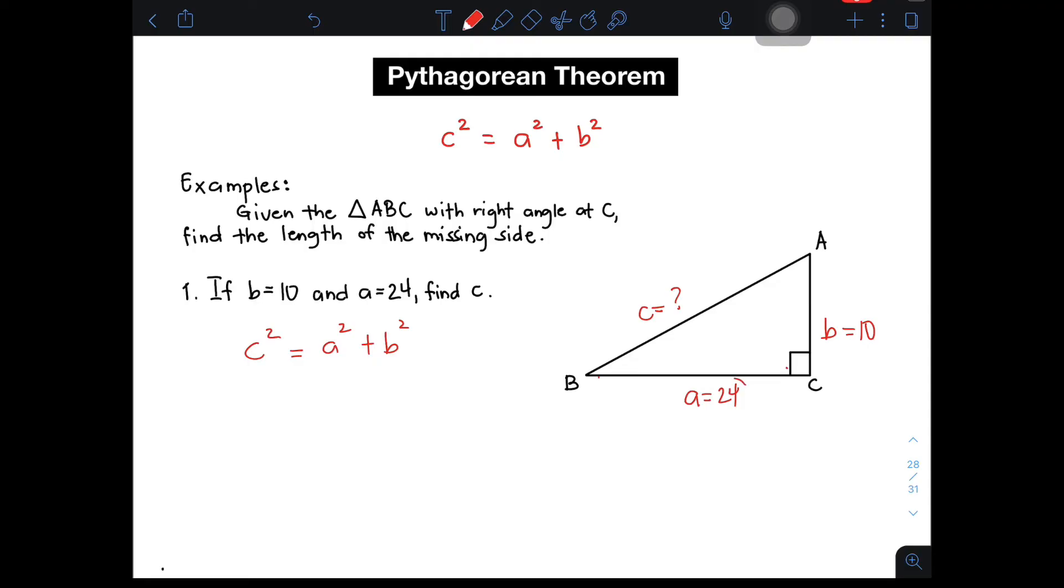And then, we need to substitute the value of A, which is 24, and the value of B, which is 10. So, this will be C squared is equal to 24 squared plus 10 squared. 24 squared is simply 576 plus, a simplified form of your 10 squared is 100. And, manipulate in this equation.